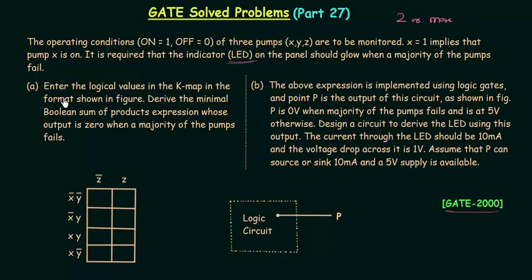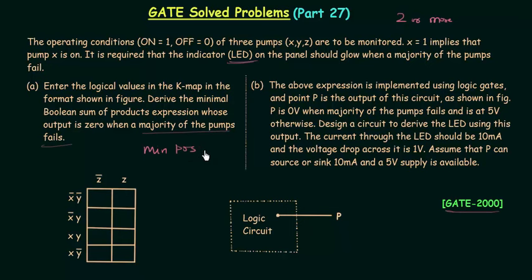For Part A, we need to enter the logic values in the K-map in the format shown in the figure, then derive the minimal boolean sum of products expression whose output is zero when a majority of the pumps fail. I will first obtain the minimal POS form, then use it to derive the minimal SOP form, after which we will solve Part B.